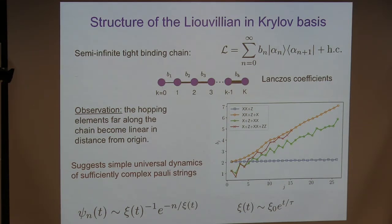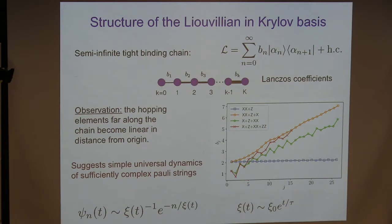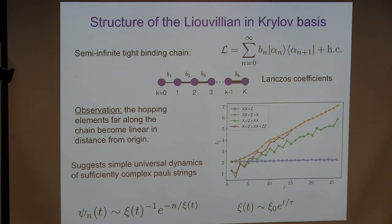This linear dynamics actually makes sense. If you plug in the linear dynamics, you can solve for the operator wave function — you see that in this Krylov space it blows up exponentially, which means that the normalization at zero has to go down exponentially. And this normalization at zero — the weight of the wave function at zero — is just the decay of the operator I started with. So I get exponential decay of the operator just from this linear behavior of the tight-binding model. The tau here is the relaxation time. All of this is for infinite temperature — if you want to do this at finite temperature, you have to trace with the finite-temperature density matrix.